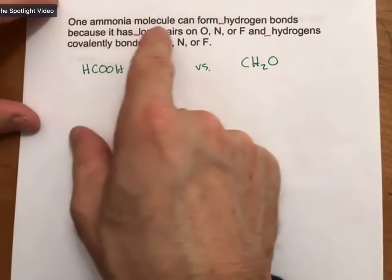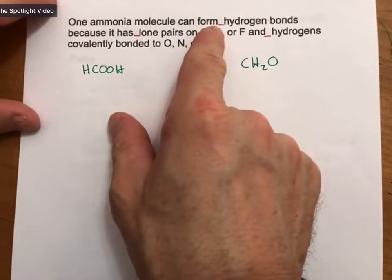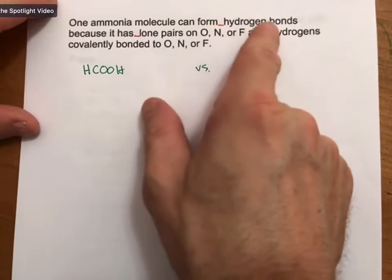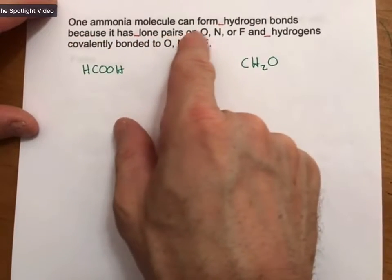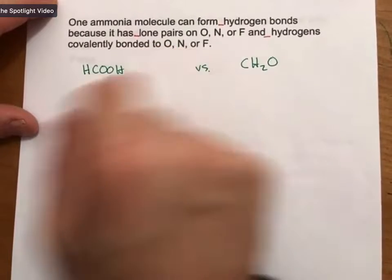It says one ammonia molecule can form blank hydrogen bonds because it has blank lone pairs on oxygen, nitrogen, or fluorine, and blank hydrogens covalently bonded to O, N, or F.